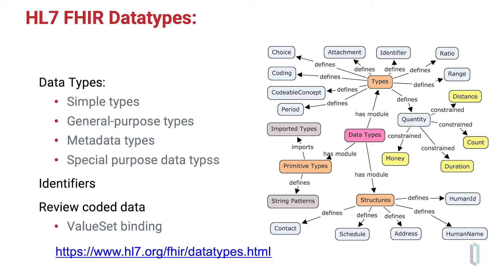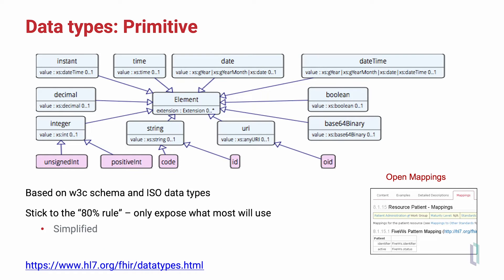It's important that there are a number of different data types represented in the FHIR specification. These vary from simple data types, metadata types, and special purpose data types. They include identifiers, and each data element in each FHIR resource has a specified data type with which it is represented. Part of enabling interoperability is that not only the data element definition, but the data type used, are both specified in the FHIR specification.